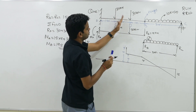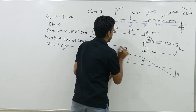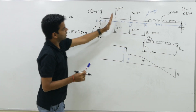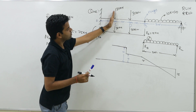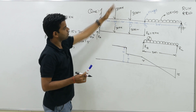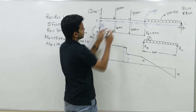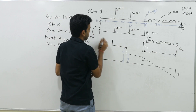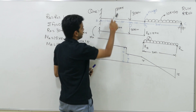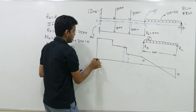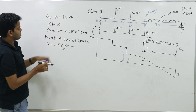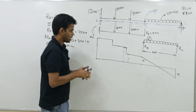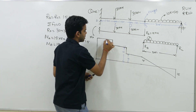From D to E there is no variation, so shear force is constant at +45. At point E, another 30 kN load is added: +45 + 30 = +75. From E to A it remains constant at +75, and at A the reaction RA = 75 kN acts downward, bringing shear force back to zero. So the shear force diagram has values +15, +45, and +75.